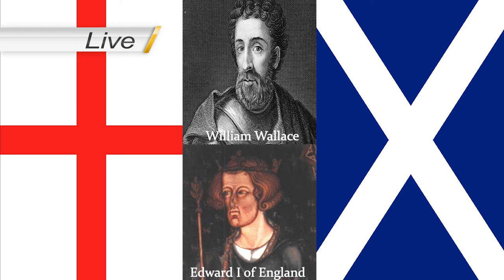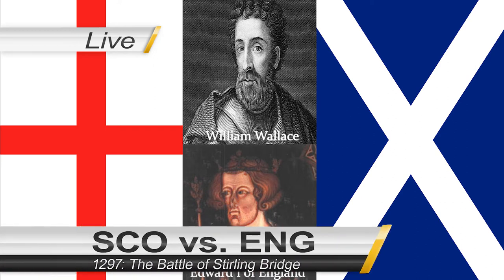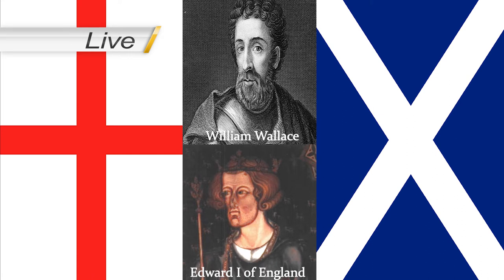Wallace and Moray have managed to recapture all but Dundee Castle. There's only so much guerrilla fighting that can go on until things come to a head, and it looks like the English and Scots armies are converging near Stirling Castle. The Scots have positioned themselves on Abbey Craig overlooking the River Forth and Stirling Bridge. There's a standoff lasting a few days. Now the English and Welsh infantry are crossing the bridge onto the flat land. The bridge is so narrow only two horses can cross side by side.